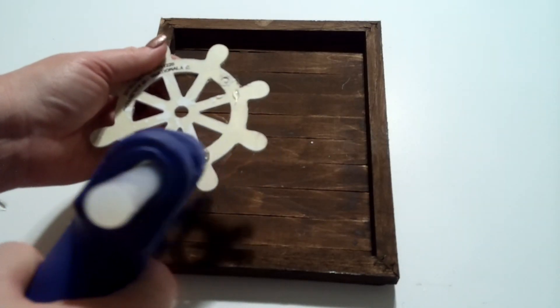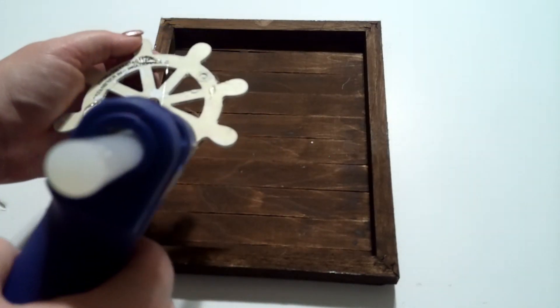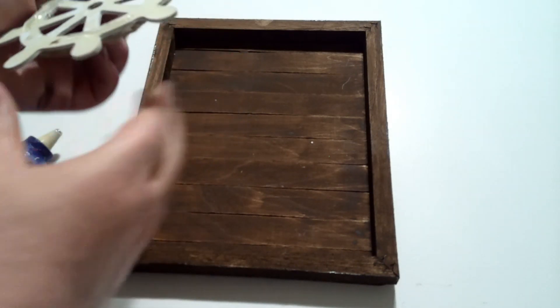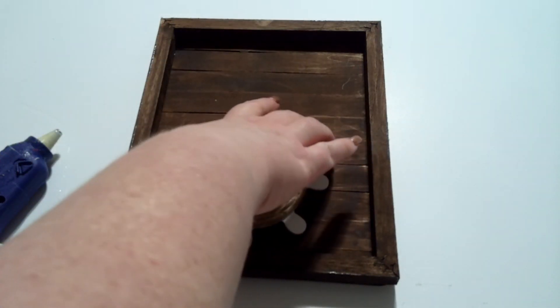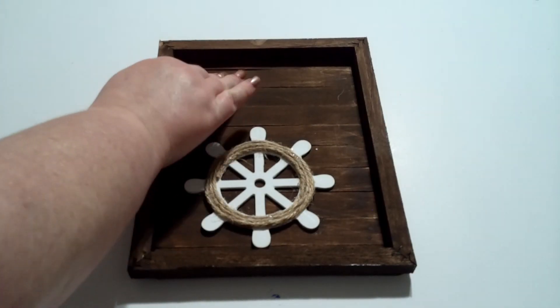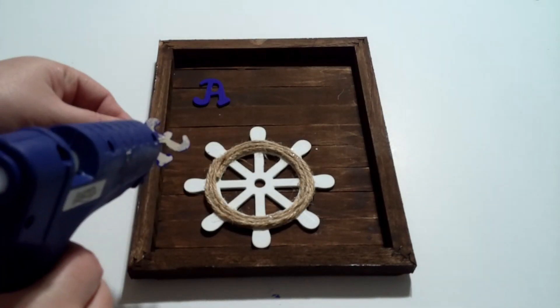Now that we have our spin wheel, we're going to hot glue it onto the bottom part of our project. And then we're also going to hot glue the letters Ahoy onto the top.